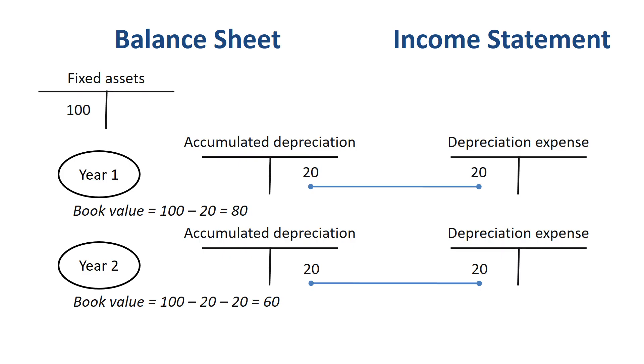The accumulated depreciation amount on the balance sheet keeps growing over the years, all the way to the point that the fixed asset is fully depreciated, or the point where you sell the fixed asset at, above, or below book value.